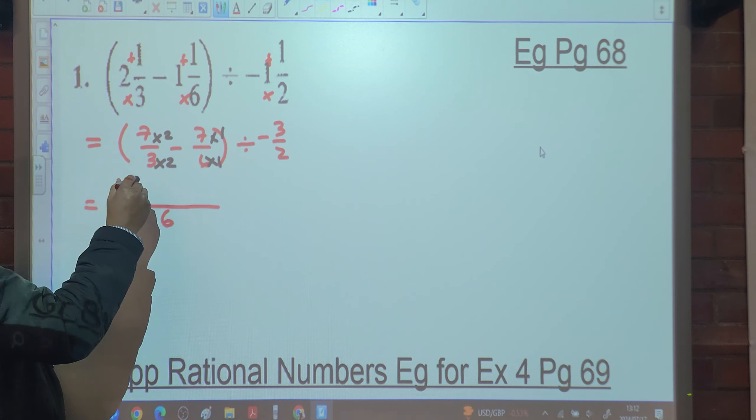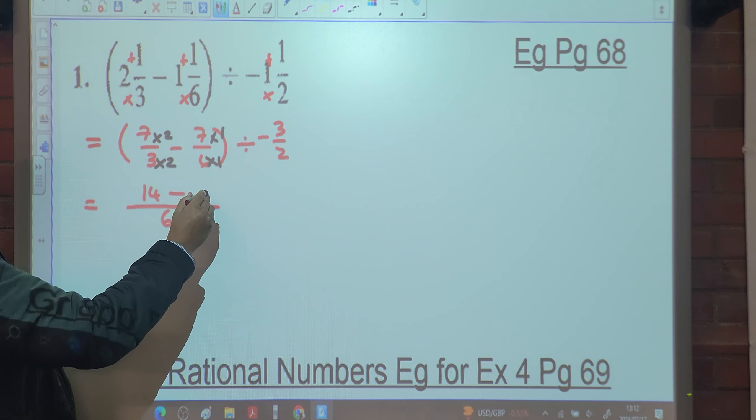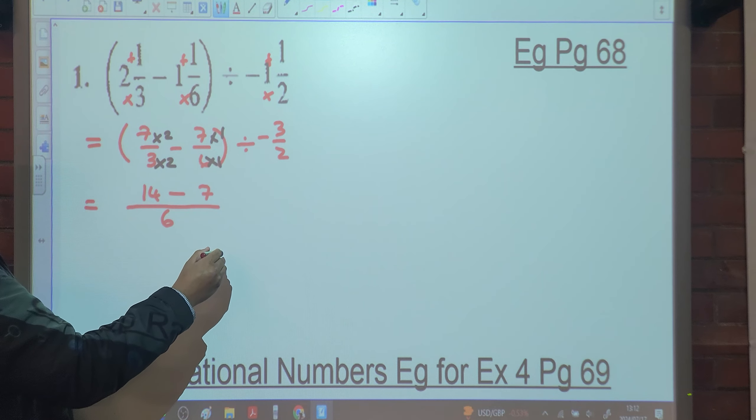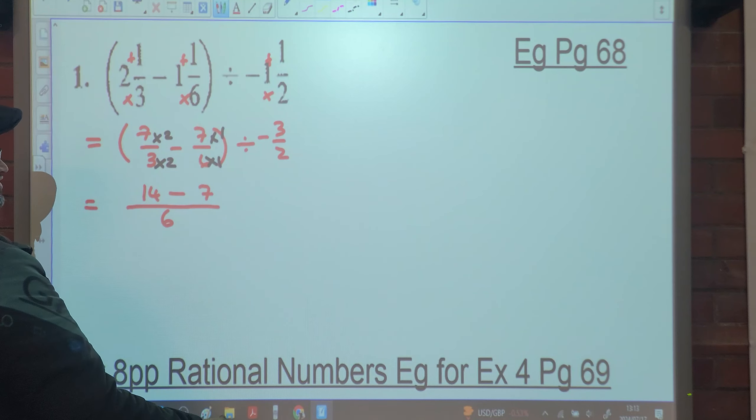Seven times two? Fourteen. Minus seven. Seven.